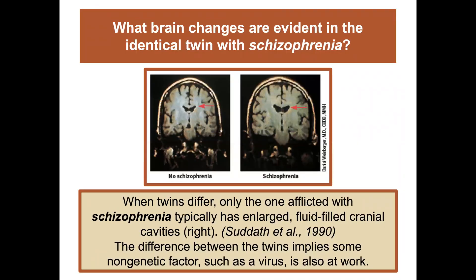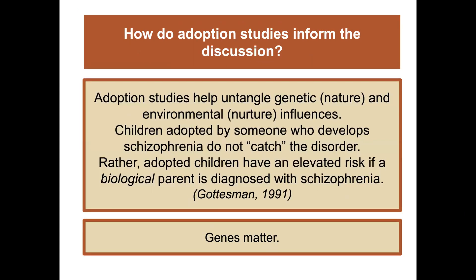When twins differ, only the one afflicted with schizophrenia typically has enlarged fluid-filled cranial cavities. The difference between twins implies some non-genetic factor, such as a virus, is also at work. Adoption studies help untangle the genetic and environmental influences. Children adopted by someone who develops schizophrenia do not catch the disorder; rather, adopted children have an elevated risk only if a biological parent is diagnosed with schizophrenia. This tells us that genes matter a great deal in the development of schizophrenia, in addition to the environment.